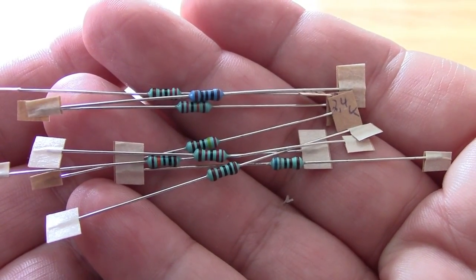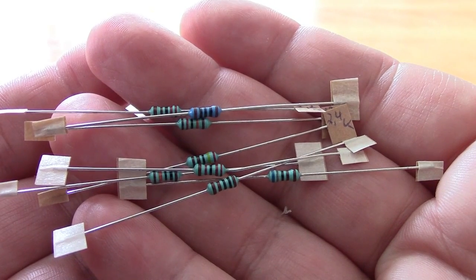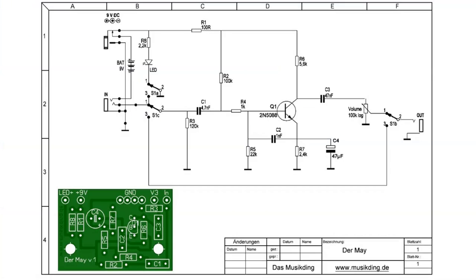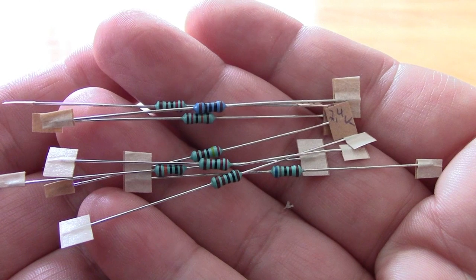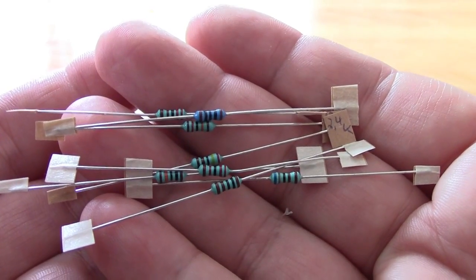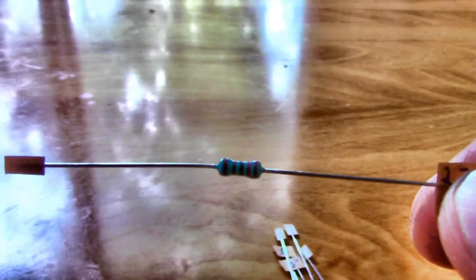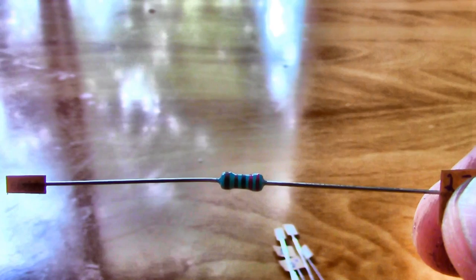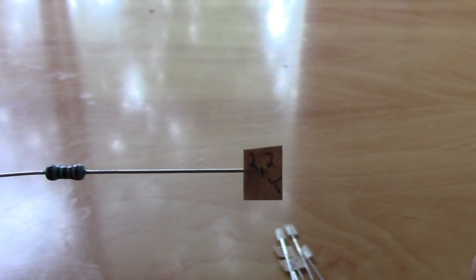To know which resistor goes where on the board we must consult the schematic. In the schematic all resistors are represented by the letter R. Each of the resistors on the schematic also indicate the resistor value. The resistor value can be determined by the color code on the resistor itself but there is no need to decipher this as Muzikding provides the value on a little label on each of the resistors provided.